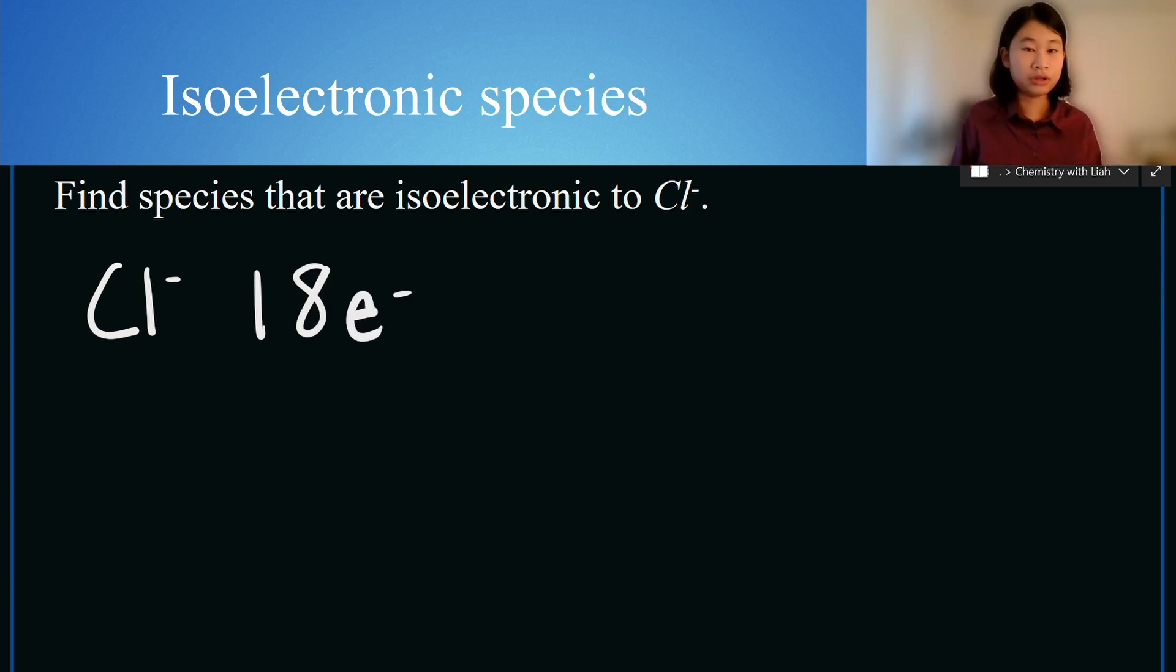Let's go look for some other atoms or elements that also have 18 electrons. One that stands out, it's neutral, is the element right after it, and that would be argon. Argon, the noble gas, has 18 electrons.